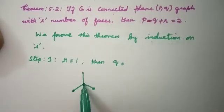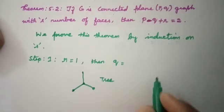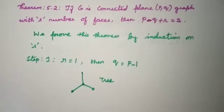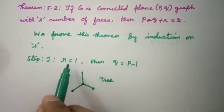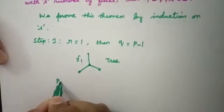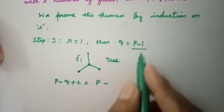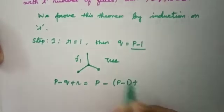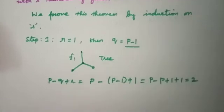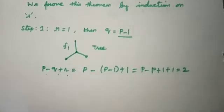We have proved in our theorem that for a tree, Q equals P minus 1. So Q equals P minus 1, and R is only one face — the exterior face F1. From this, P minus Q plus R can be written as: P minus (P minus 1) plus 1, which equals P minus P plus 1 plus 1 equals 2. So P minus Q plus R equals 2. We have proved Euler's formula for the initial condition.